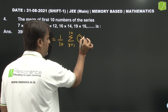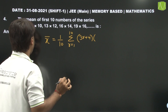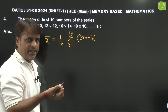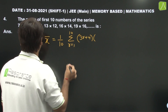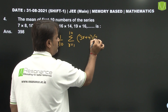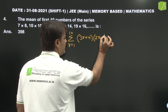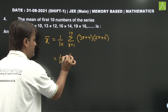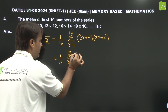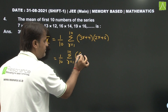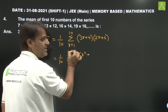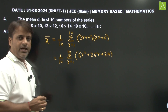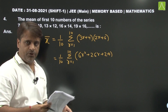General term of first pattern: 3R plus 4. Second pattern: 8, 10, 12, 14, 16 — an arithmetic progression with general term 2R plus 6. Now the summation of the product simplifies to (1/10) summation from R equals 1 to 10 of (6R squared plus 26R plus 24). Distributing: 6 times summation of R squared plus 26 times summation of R plus 24 times summation of 1.